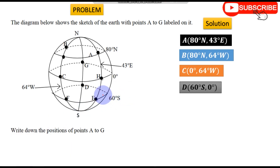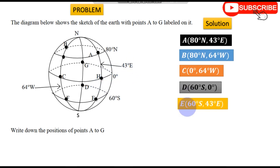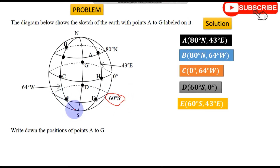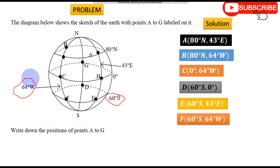Point E is seated on 60 degrees South, and the longitude — E is lying on 43 degrees East. So E is 60°S, 43°E. Point F is seated on the same latitude, 60 degrees South. The longitude for F is on the other side, which is 64 degrees West. So F is 60°S, 64°W.